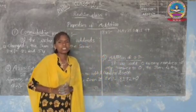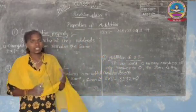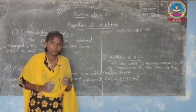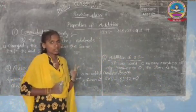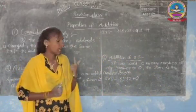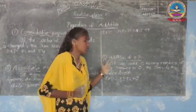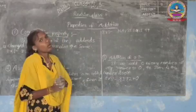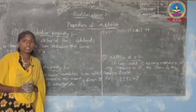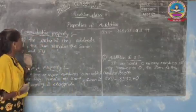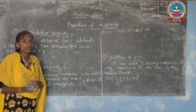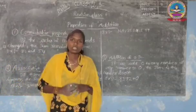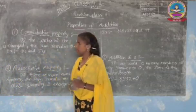The properties are three in addition. The first one is commutative property, the second is associative property, and the third one is addition of zero. Let us see what these properties are. The first one is commutative property — it is also called order property.